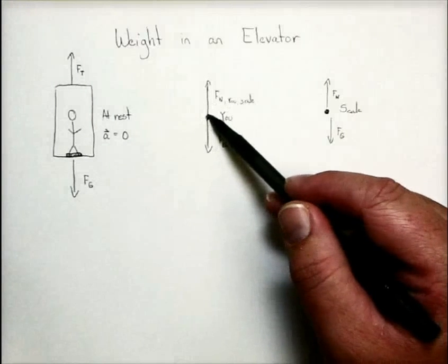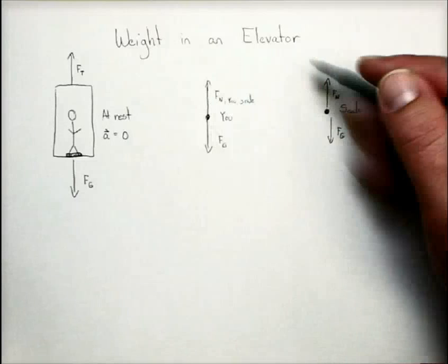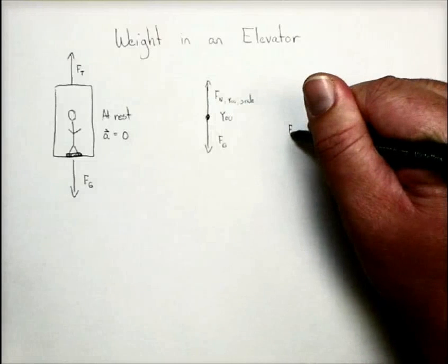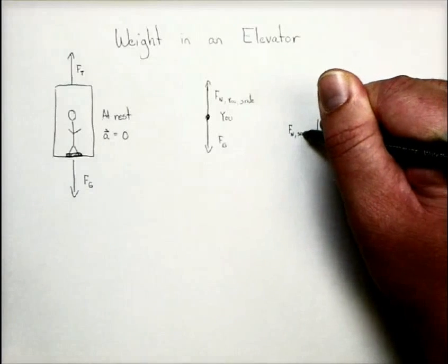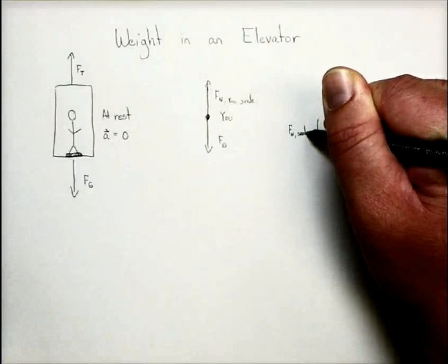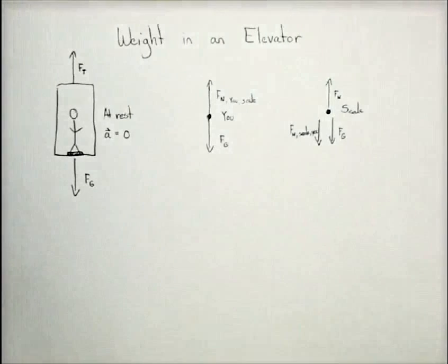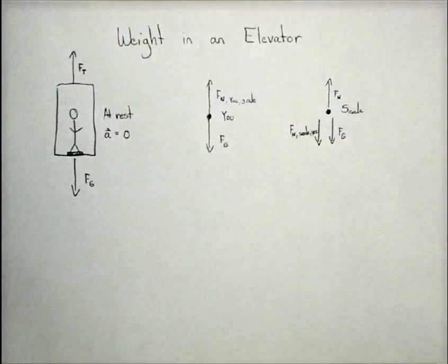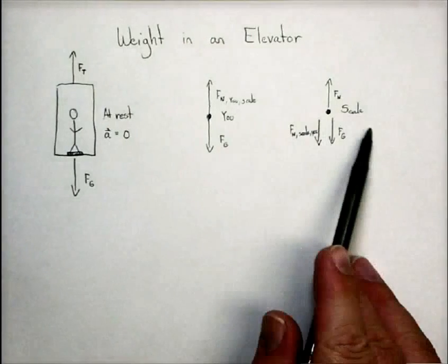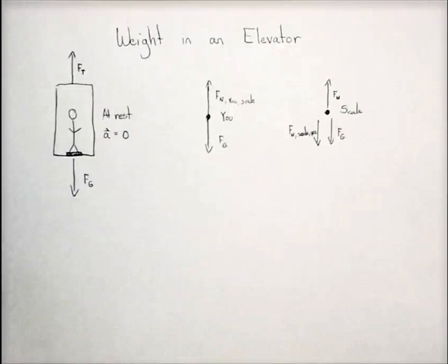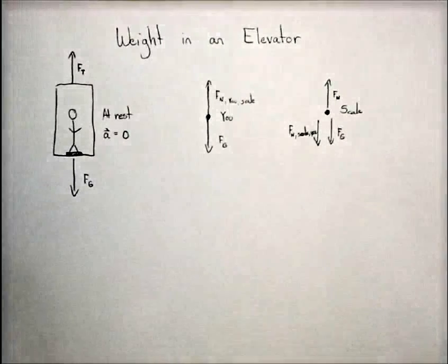But notice also that it will have this second normal force. It's in contact with you. It's pushing up on you. You're pushing down on it. So that is the normal force on the scale from you. And what we mean by weight is the scale is actually taking a measurement of this force that you're putting downward on it. So all this collectively is what the scale reports as your weight.